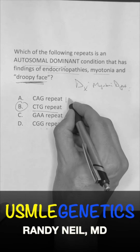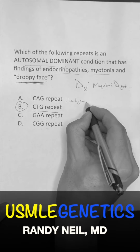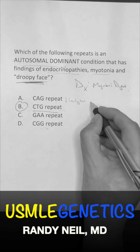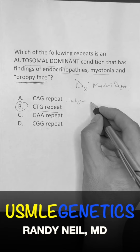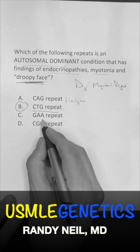CAG is going to be Huntington's, and that's when the neurons in the brain break down and die. You get those involuntary movements.